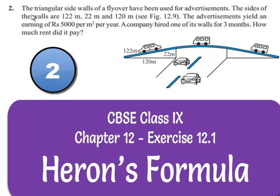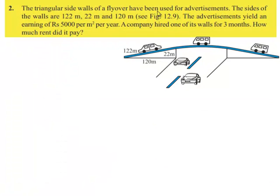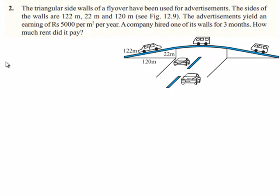Let us move on to the second question. The triangular side walls of a flyover have been used for advertisements. The sizes of the walls are 122 meters, 22 meters, and 120 meters as seen in the figure. The advertisements yield an earning of rupees 5000 per meter square per year. A company hired one of its walls for three months. How much rent did it pay? Let's move on to the solution.